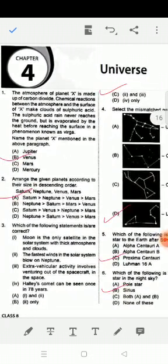Next, you have to arrange the given planets according to their size in descending order. Descending order means from bigger to smaller. The planets given are Saturn, Neptune, Venus, and Mars. So it is option A: Saturn is the biggest planet.